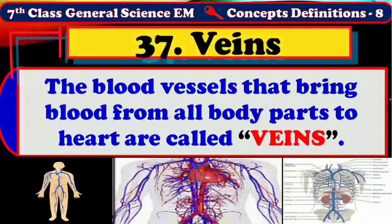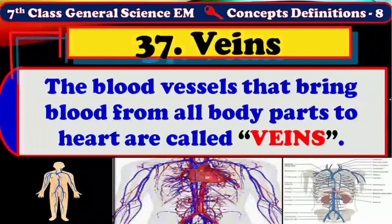The veins are thin when compared to arteries. The blood pressure is also low in veins when compared to arteries. Unlike arteries, veins contain valves in them. The diameter of veins will be around 30 micrometers.